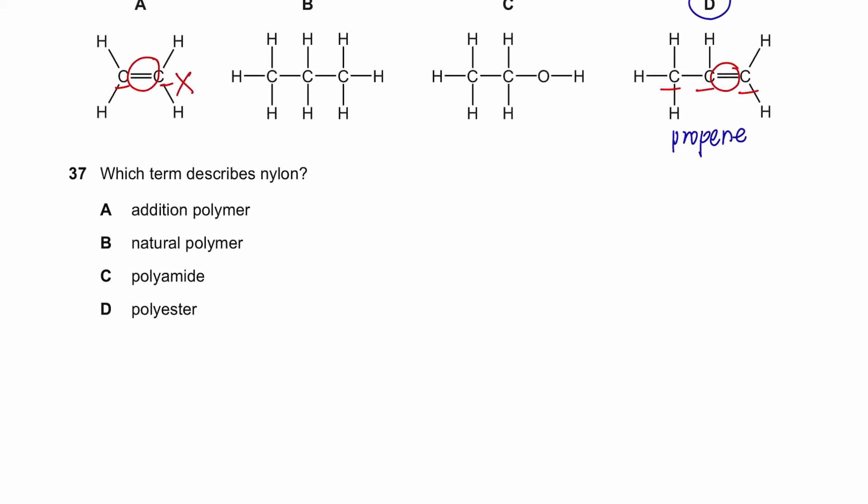Question 37. Which term describes nylon? Under organic chemistry, you will learn about polymers. And polymers can be formed by 2 methods. One is addition and the other is condensation.